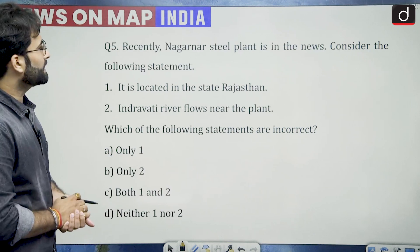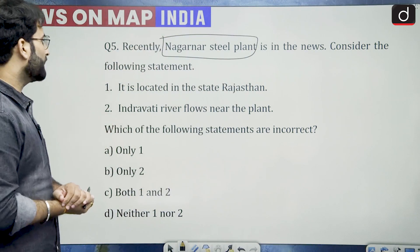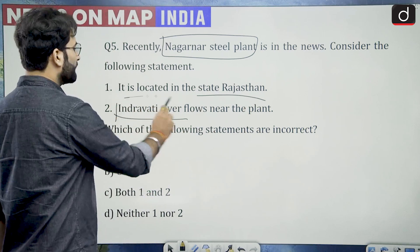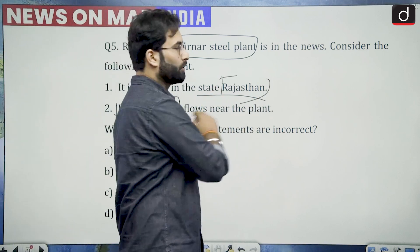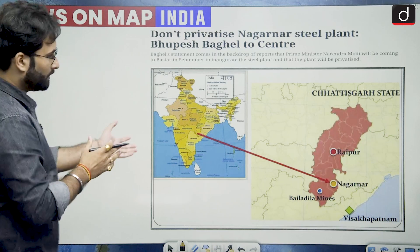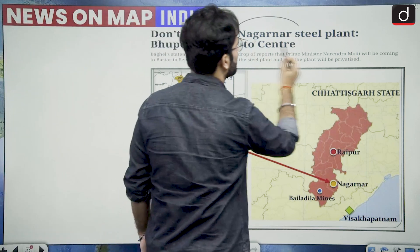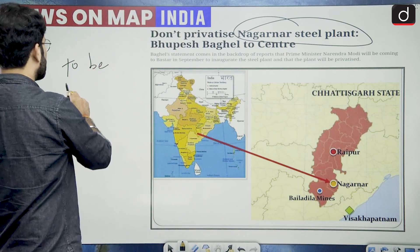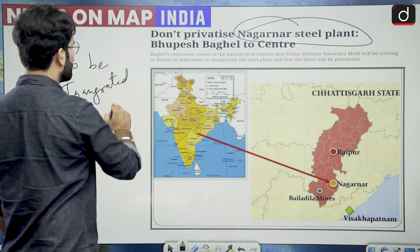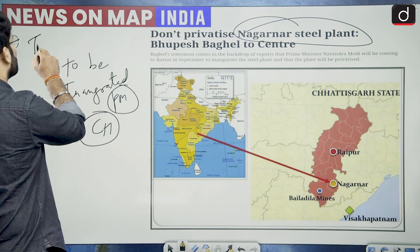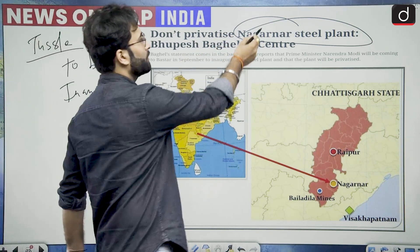Going to question number five. Recently, Nagarnar steel plant is in news. Consider the following statements: it is located in the state of Rajasthan; Indiravati river flows near the plant. If we know the location of Indiravati river, we will not say it is in Rajasthan. Why we took this particular question is because recently this particular plant is to be inaugurated by the Prime Minister in Chhattisgarh. But the central government is planning to privatize this plant, and the state government has some issues with that. So there is a tussle between the state of Chhattisgarh and the centre with respect to this particular steel plant.